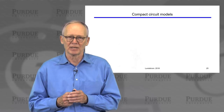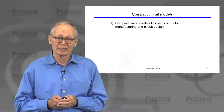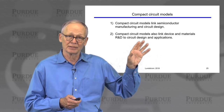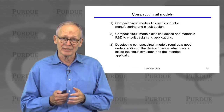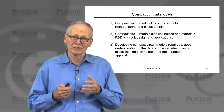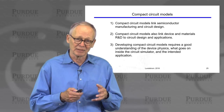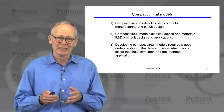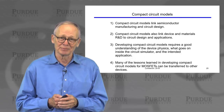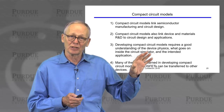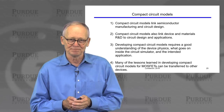We wrapped up the course by saying a few words about compact circuit models. The key points were that this is the link between semiconductor manufacturing and circuit design — and also increasingly a link between semiconductor research and eventual applications. Developing a good circuit model requires a good understanding of device physics, because we want the model to be physics-based. But it also requires an understanding of how electronic circuit simulation programs work, and an understanding of the application, so that we know which features of the device need to be most accurately modeled. There are many lessons and pitfalls in developing compact models, learned in painful ways over the years.